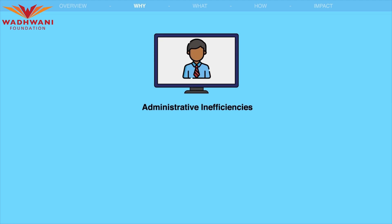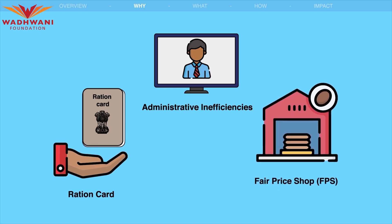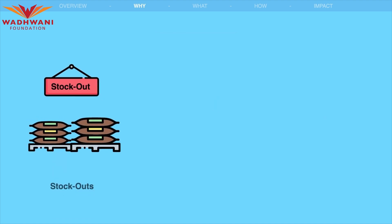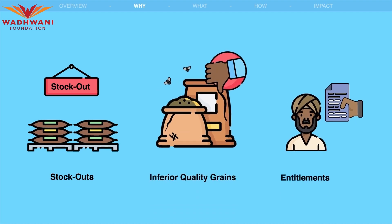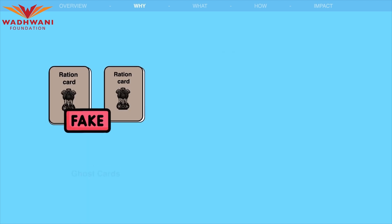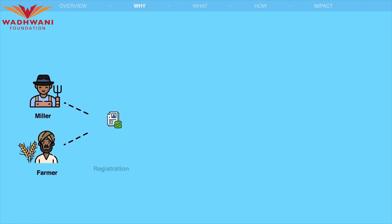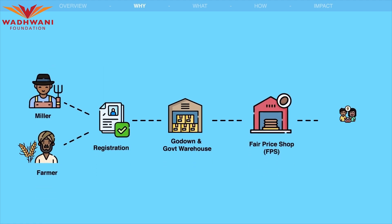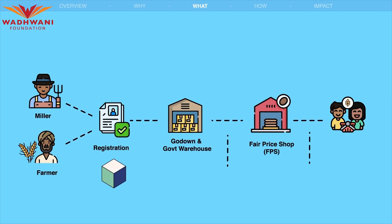There are multiple administrative inefficiencies, such as difficulty in obtaining ration cards, irregular opening of fair-price shops, frequent stockouts, distribution of inferior quality grains, lack of awareness of entitlements, circulation of ghost cards, and the absence of grievance redressal channels, all of which hinder the effectiveness of the PDS system.